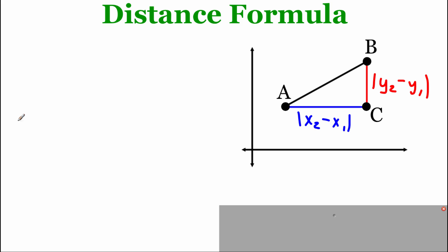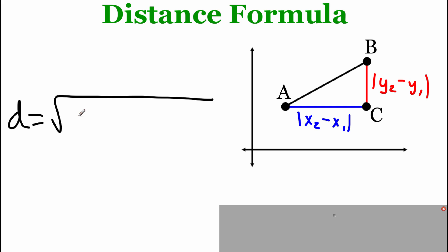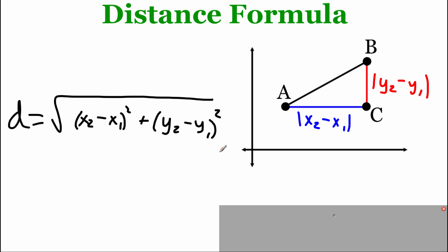Writing out the formula: d stands for distance. So distance equals the square root of — looking at that first value — we're going to take x2 minus x1 and square that quantity, plus we're going to do the same thing with the y's: y2 minus y1, and square that quantity. So there is our distance formula.